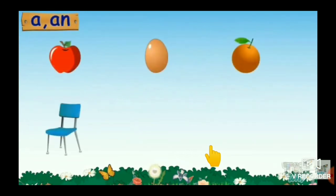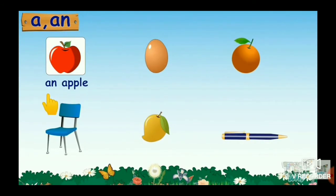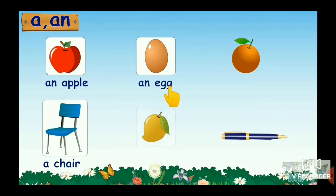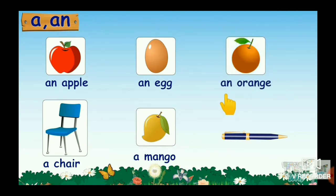Here we have some objects children, let's name them. This is an apple, this is a chair, this is an egg, this is a mango. So, this is an orange, this is a pen.